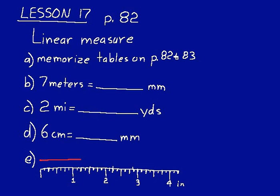So that first problem, what you can do on that is you can think, well, 7 meters, I know that a meter is 100 centimeters, so 7 meters would be 700 centimeters. And then there's 10 millimeters in a centimeter, so that should be 7,000 millimeters.